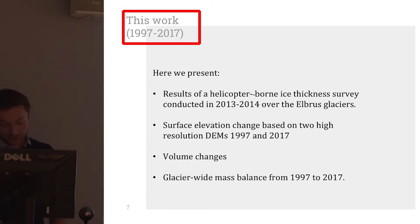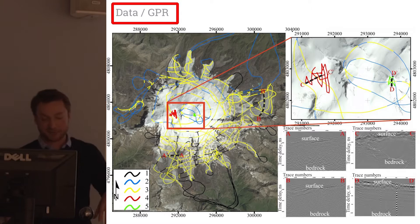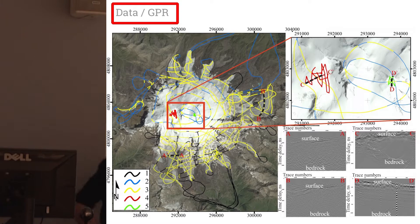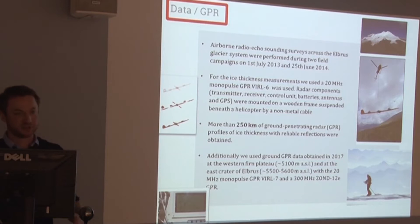So we have two main datasets here. Back in 2013–14, we did a huge GPR survey using a helicopter. We obtained about 250 kilometers of GPR data profiles with reflections, and we were able to get the ice thickness distribution and then estimate the volume of each glacier in the Elbrus system.